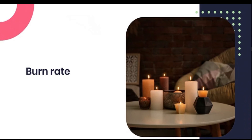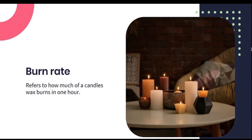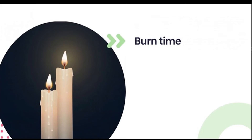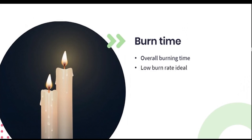The terms burn rate and burn time indicate two separate things which can easily be confused. Burn rate refers to how much wax on a given candle is burned through in one hour. Burn time, however, refers to the overall length of time that candle should burn for. Ideally, we'd like our burn rate to be as low as possible, allowing for a very small amount of wax to be consumed and thereby making the total burn time of one candle far longer.